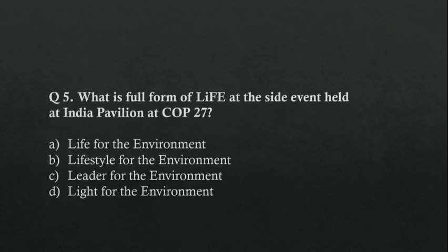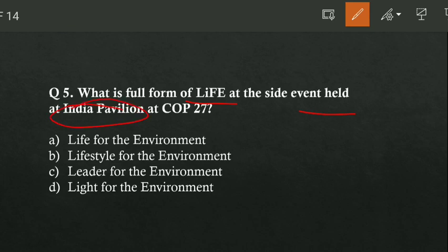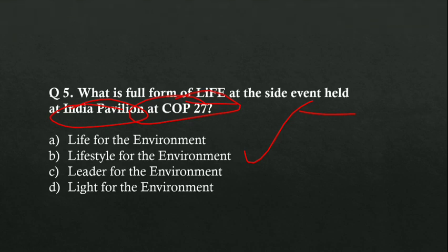Next, what is the full form of LIFE, at the side event held at the Indian Pavilion at COP 27? Option A is Life for the Environment, option B is Lifestyle for the Environment, option C is Leader for the Environment, and option D is Light for the Environment. Option B is correct — LIFE stands for Lifestyle for the Environment.